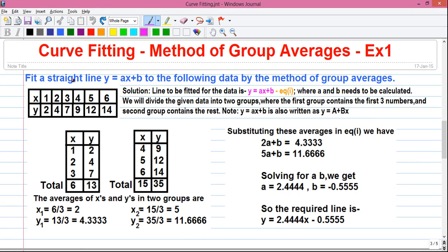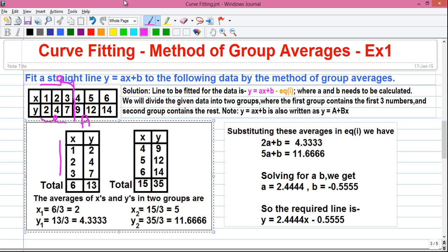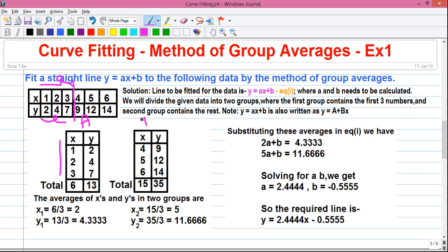So let's divide the numbers in two groups where group a will contain the first three values of x and their corresponding y values. So x values are 1, 2, 3 and corresponding y values are 2, 4, 7. And group b will contain the rest of the x values that is 4, 5 and 6 and corresponding y values 9, 12 and 14. So we have divided the numbers in two groups.